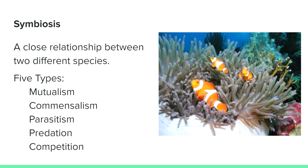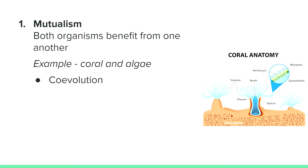Let's talk about symbiosis. Symbiosis is the close relationship between two different species. There are five types: mutualism, commensalism, parasitism, predation, and competition. Mutualism is the relationship where both organisms benefit from one another. One example is the co-evolution of coral and algae, where the algae makes glucose through photosynthesis and the coral absorbs the glucose. The coral benefits from the food that algae makes and the algae benefits from the coral's protection. This type of symbiosis can be identified as plus-plus since they both benefit.